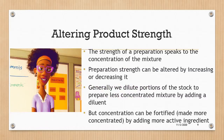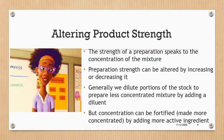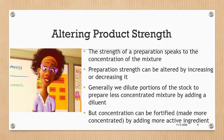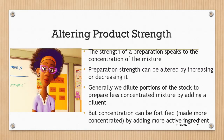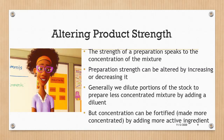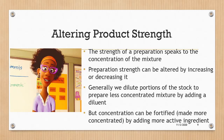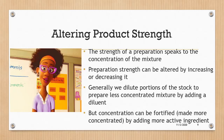The strength of a preparation refers to its concentration. Preparation strength can be altered by increasing or decreasing the constituent in question. For example, a 70% alcohol solution has 70% concentration of alcohol, a 95% alcohol solution is more concentrated, and a 45% solution would require adding more active constituent to increase its concentration.